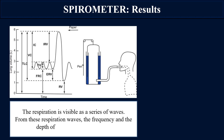The spirometer measures lung volumes and capacities as discussed in previous lectures: tidal volume (normal inspiration and exhalation), forceful inhalation (inspiratory reserve volume), and forceful exhalation (expiratory reserve volume). After maximum forceful exhalation there is always some air remaining in the lungs known as residual volume, which prevents the lungs from collapsing. The spirometer detects all these volumes except the residual volume, which requires other techniques.